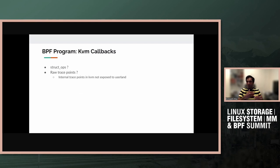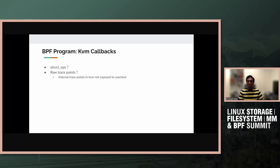Now for the first individual detail: KVM callbacks on the host side. In v2 we used struct_ops, which requires some boilerplate code. In v3 we're thinking about trace points — can we use trace points instead, and are they better than struct_ops? What we need are events like VM enter, VM exit, interrupt injection, and when the vCPU halts — these are the points where scheduling decisions for the vCPU have to be made.